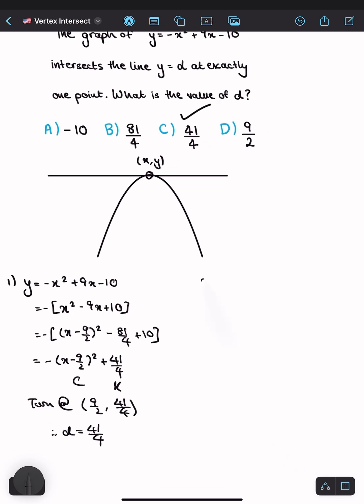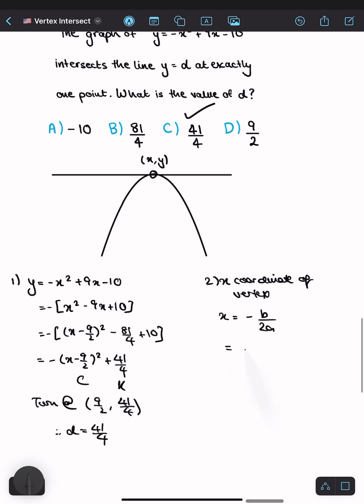Another method uses the fact that the x-coordinate of the vertex equals -b/2a. Substituting b = 9 and a = -1, we get -9/(2×-1) = 9/2.